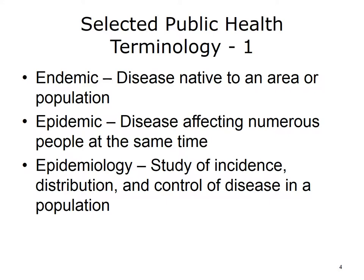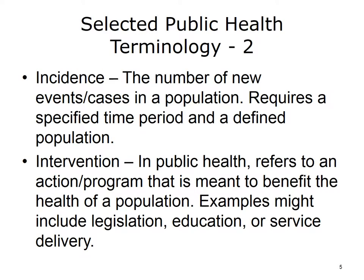This slide shows a selection of key terminology for public health, including definitions. Endemic: disease native to an area or population. Epidemic: disease affecting numerous people at the same time. Epidemiology: study of incidence, distribution, and control of disease in a population. Incidence: the number of new events or cases in a population, requiring a specified time period and a defined population. Intervention: in public health, refers to an action or program meant to benefit the health of a population.